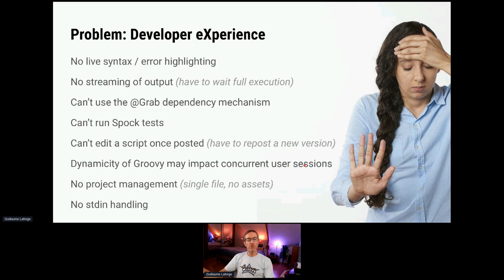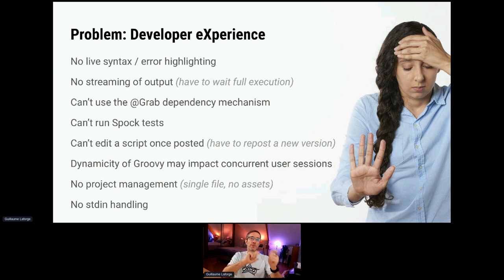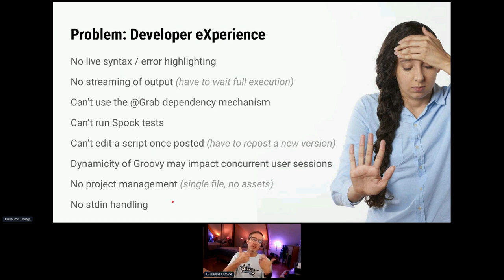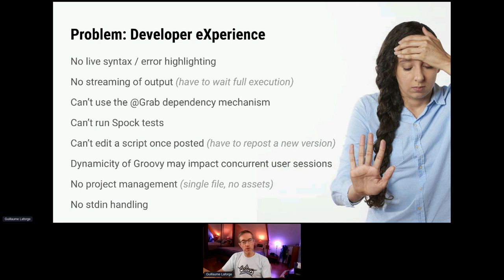Now you can use Grab — great. Now you can write Spock tests — great. You cannot edit a script once it's posted since you can't even save scripts right now, but you can share scripts with the URL parameters and update a gist. In terms of metaclass impact, you're pretty much safe because there can only be one concurrent execution per function running a Groovy script, and as we restore state before and after execution, you shouldn't be much impacted by potential metaclass changes. No project management yet — it's still one single monolithic script. Perhaps we could have several tabs for several files. And you still have to enter input in your script rather than being able to enter data on stdin.